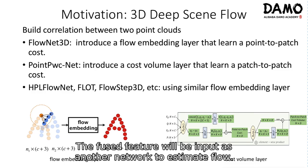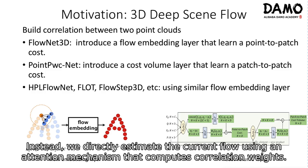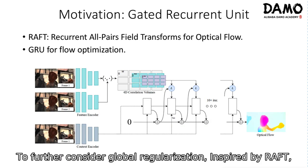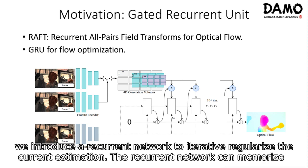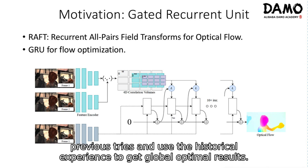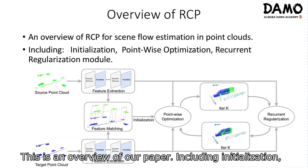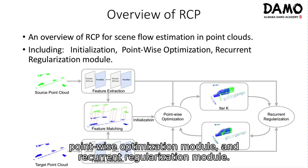Instead, we directly estimate the current flow using an attention mechanism that computes correlation weights. To further consider global regularization, inspired by RAFT, we introduce a recurrent network to iteratively regularize the current estimation. The recurrent network can memorize previous tries and use historical experience to get globally optimal results. This is an overview of our paper, including initialization, a point-wise optimization module, and a recurrent regularization module.